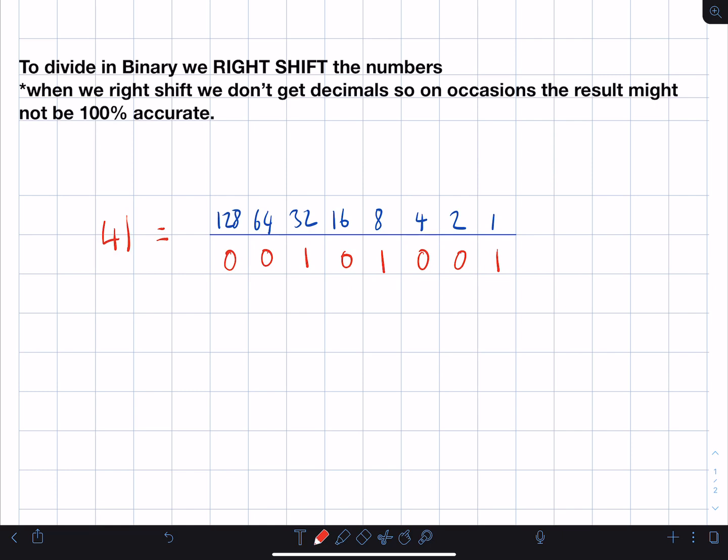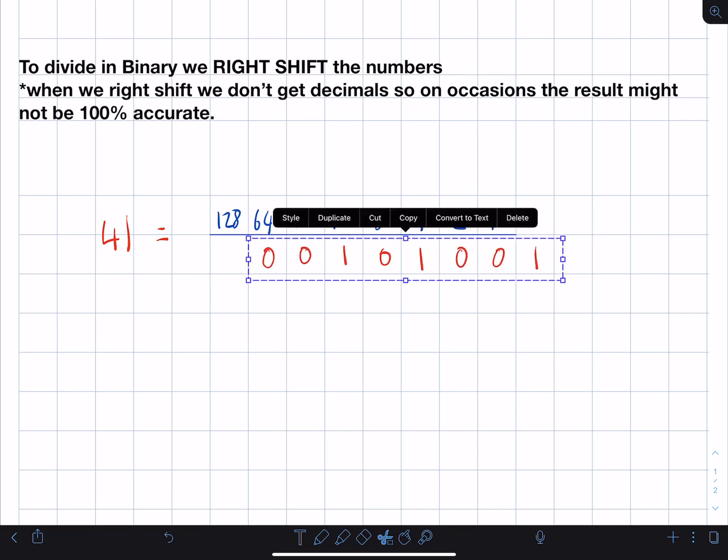What we do is we right shift by 1, okay? It's kind of the opposite to what we did with multiply. So I'm going to get these numbers and right shift them by 1. So this will divide the number in 2.